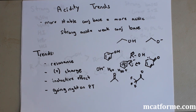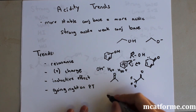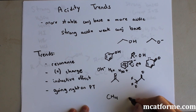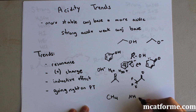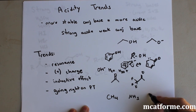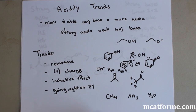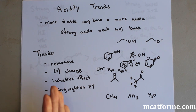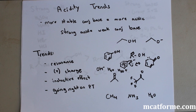Going right on the periodic table also increases acidity. For example, comparing CH₄, NH₃, and H₂O — those are C, N, and O, right next to each other on the periodic table. Going from left (C) to right (O) increases the acidity. So the general trend is: the further right on the periodic table, the more acidic.